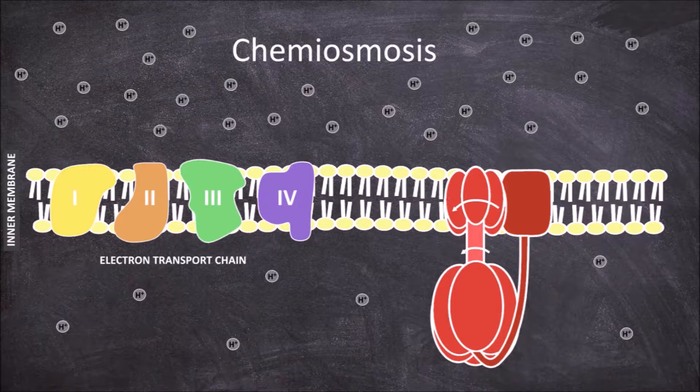Once the hydrogen makes a complete rotation it moves through a second channel in the stator that leads into the matrix. The catalytic knob consists of several subunits including three catalytic subunits.